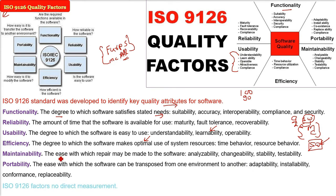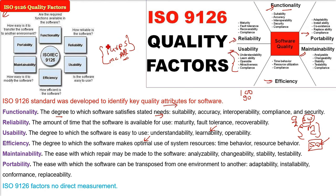So all these are the ISO 9126 quality factors. This gives a very good idea about quality, but there has to be some measurement criteria. Until we measure, we will not be able to know the numbers — things should not be subjective. Whether it is FURPS, McCall, or ISO 9126, all are aimed at defining quality.